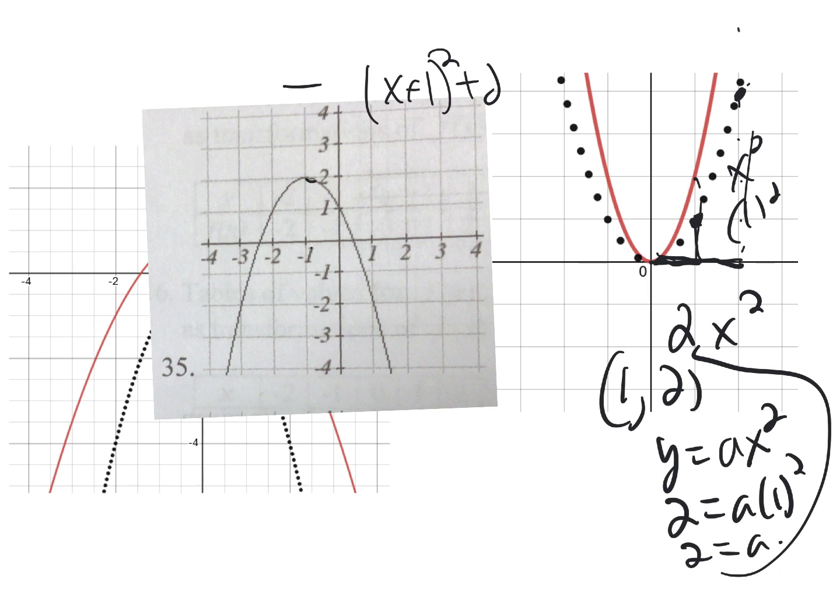I see I go over 1, I go down 1. I go over 2, I'm going down 4, so that tells me A is just 1, and it just happens to be negative because it's opening down.